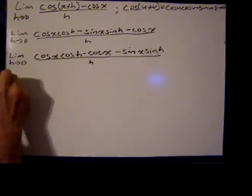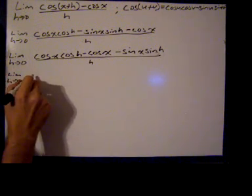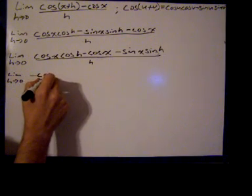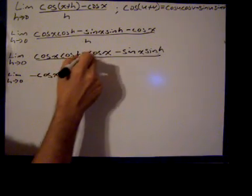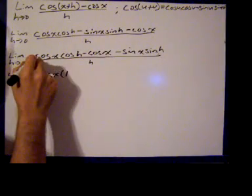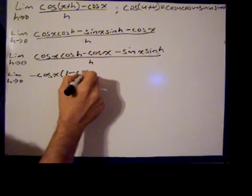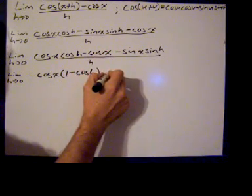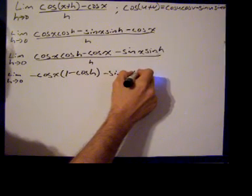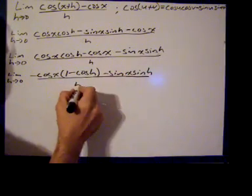So I have the limit as h goes to zero of the negative cosine of x times — when I pull out a negative cosine of x from the first term I get a positive one, and when I pull out a negative cosine of x from the second term I get a negative cosine of h — minus sine of x times sine of h, all over h.